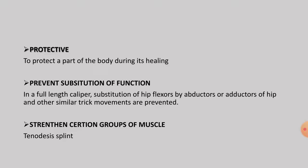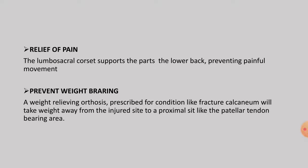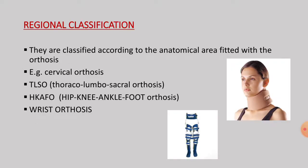Orthoses can also strengthen certain muscle groups, like in tenodesis. They are used for pain relief — for example, a lumbosacral corset supports the lower back and prevents painful movement. Regarding preventing weight bearing: a weight-relieving orthosis prescribed for conditions like calcaneal fracture takes weight away from the injured side to the proximal side, such as the patellar tendon bearing area. Regional classification categorizes orthoses by the anatomical area fitted, such as cervical orthosis, thoracolumbosacral orthosis, hip-knee-ankle-foot orthosis, and wrist orthosis.